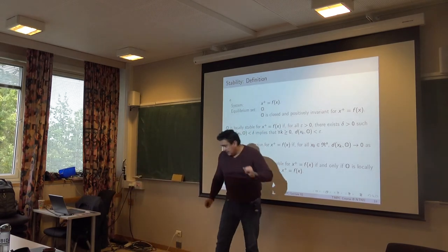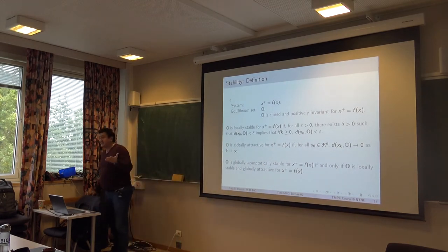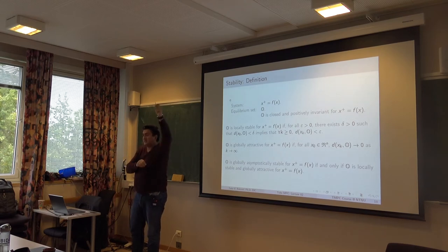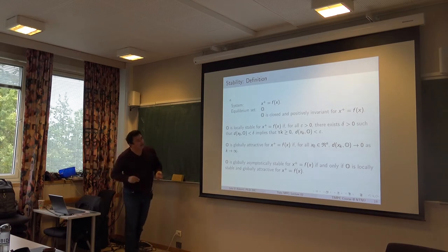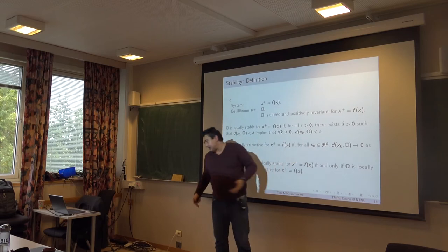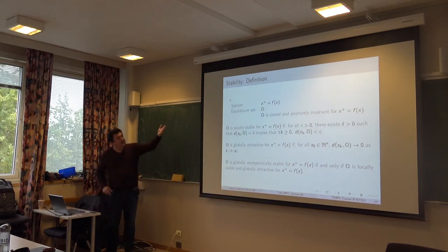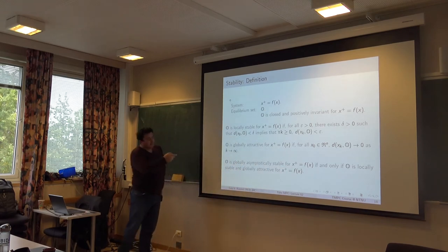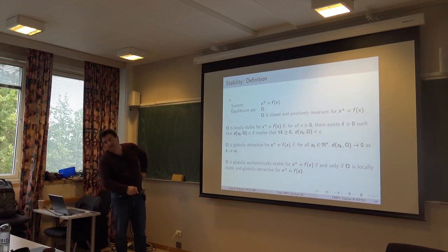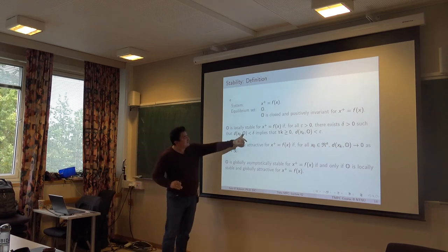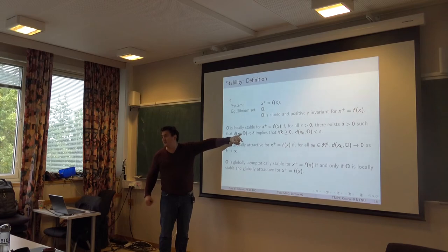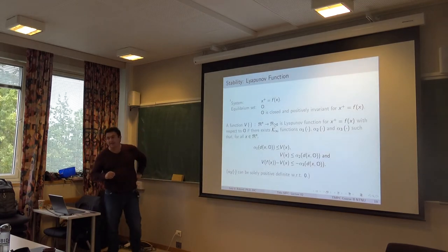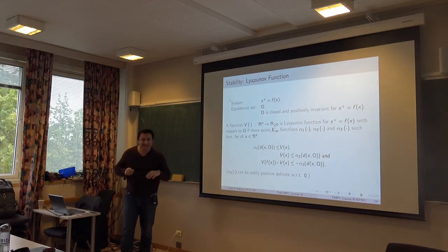The set is globally asymptotically stable for x+ = f(x) if and only if it satisfies these two properties: locally stable and globally attractive. In applications, we'll be dealing with the origin — we want to regulate the system to origin. Distance will be just a norm or a K-class function. The second question: when you talk about stability, how do you verify it? Do you run all possible trajectories? Actually, it's not how you do it — you do it by detecting something called a Lyapunov function.